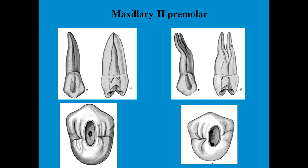The maxillary second premolar usually has either a single large pulp chamber or sometimes divides into two, exiting as two apical foramina. Another variation is a bionate shape root. If it is a single canal, the access cavity looks accordingly, but if there are two root canals, the access cavity reflects that. The shape of the access cavity preparation is ovoid.